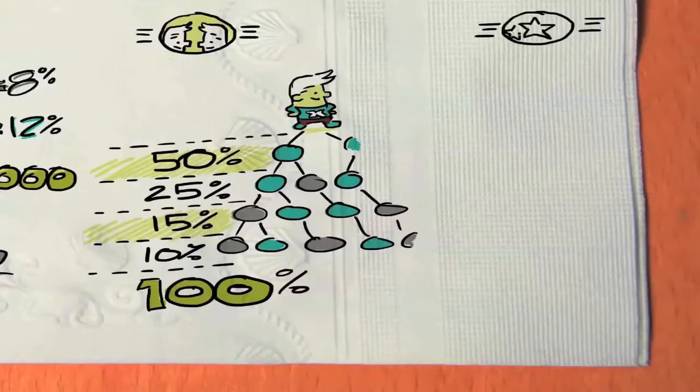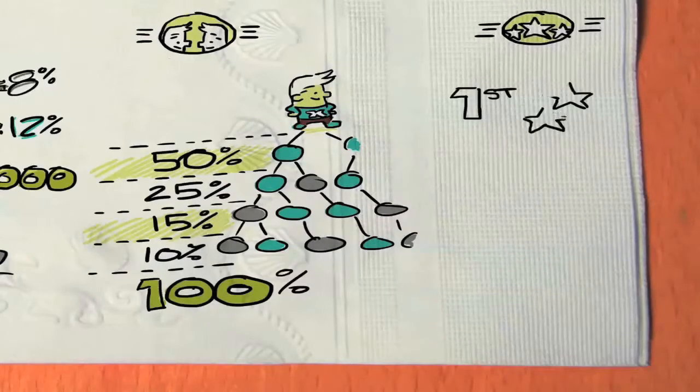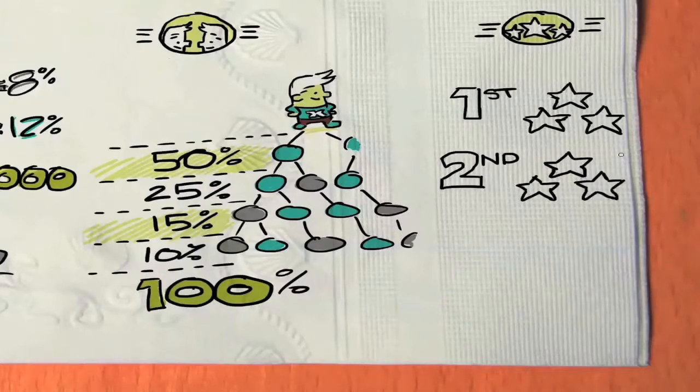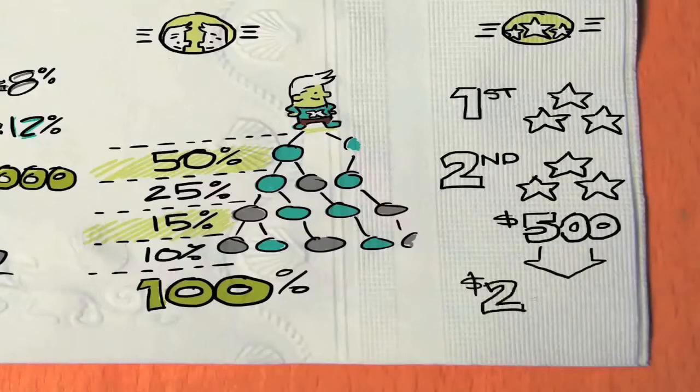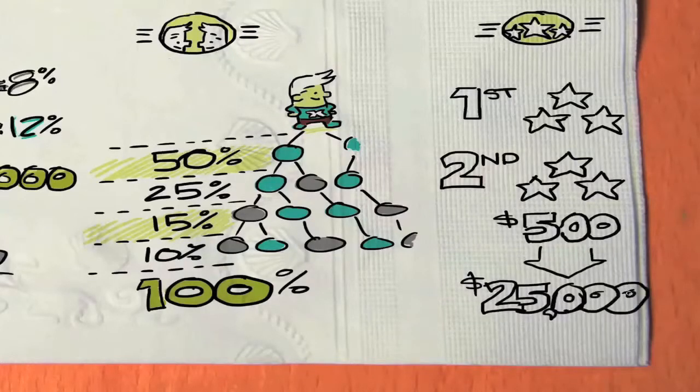This takes us to the fifth stream of income, which is called the rank advancement bonus. Hit a new rank once and you get the title. Hit the rank twice and you'll also get the rank advancement bonus. Depending on the rank achieved, these bonuses go from $500 all the way up to $25,000.